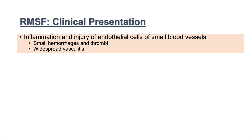The clinical presentation of Rocky Mountain Spotted Fever is dependent on the pathophysiology of Rickettsia rickettsii. Rickettsia rickettsii invades endothelial cells of small blood vessels, leading to inflammation and injury of those endothelial cells. This leads to small hemorrhages and thrombi, which also lead to widespread vasculitis.